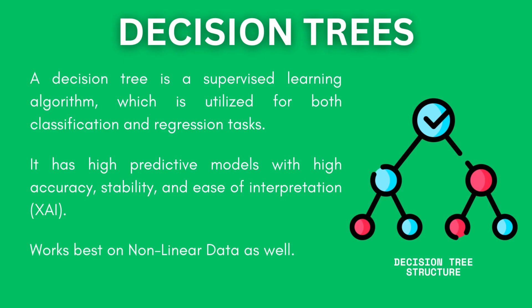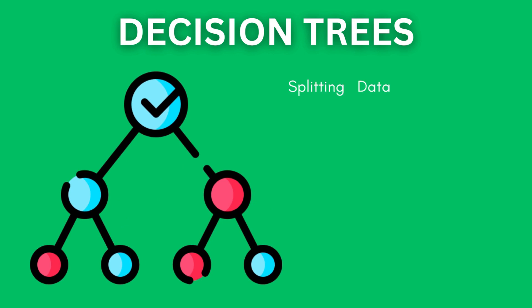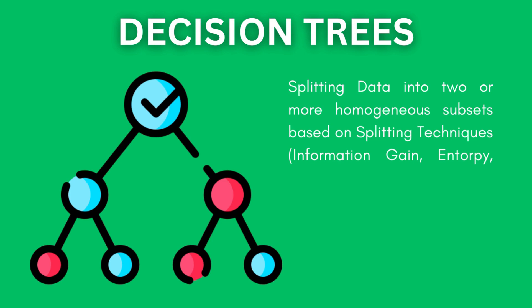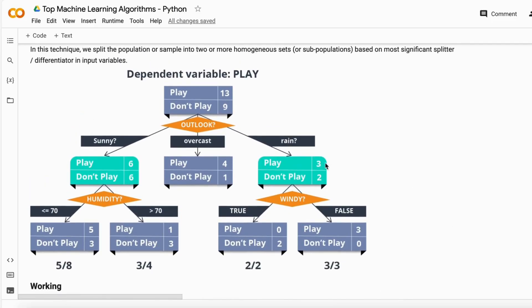And in this technique, we split the whole data set into two or more homogeneous sets based on the better split to get our decision tree output at the end of the prediction. So let me just show you a simple example.